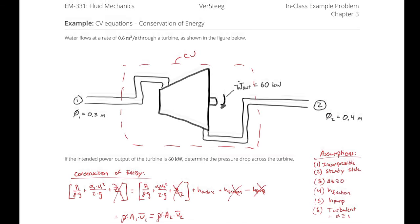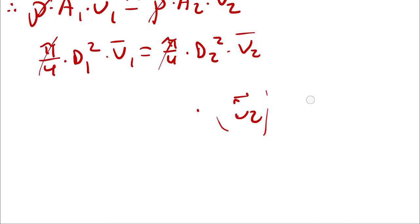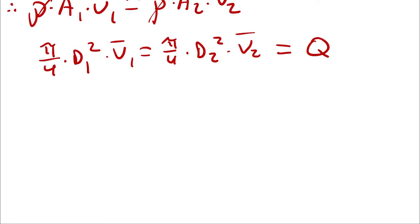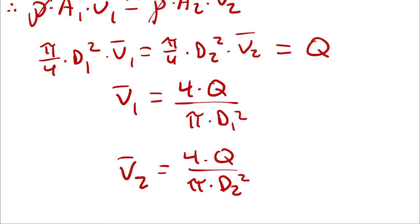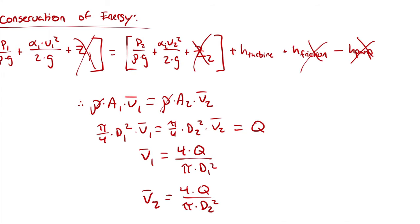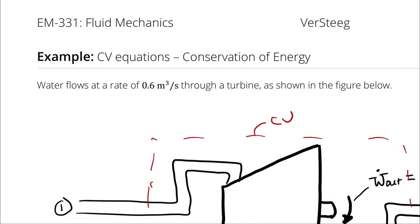I got a little ahead of myself because I assumed I had V1, but I have the volumetric flow rate, not V1 directly. So the volumetric flow rate is the cross-sectional area times velocity, meaning both terms are the volumetric flow rate. Therefore, average velocity at state 1 is 4Q divided by pi times D1 squared, and average velocity at state 2 is 4Q divided by pi times D2 squared. I'm going to leave them symbolically for now.